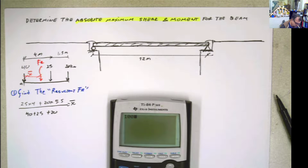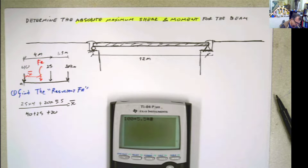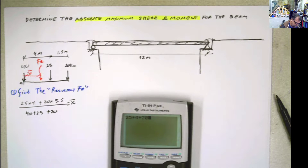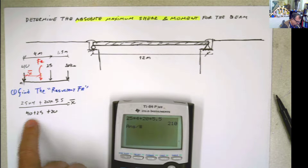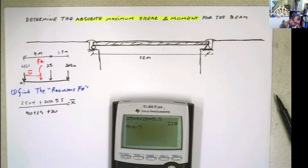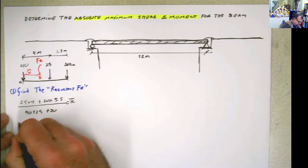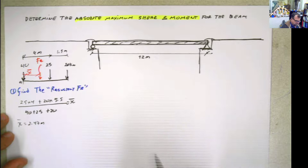That gives us x̄ = 210 divided by 85, which is approximately 2.47 meters. So the resultant force location is 2.47 meters from the 40 kN load. That was the first step.